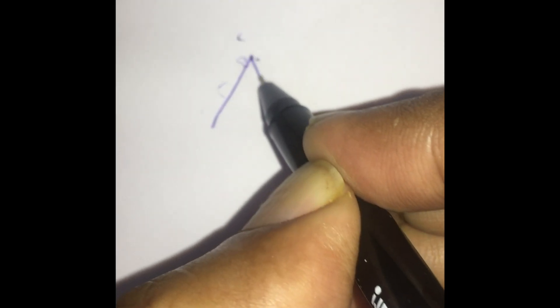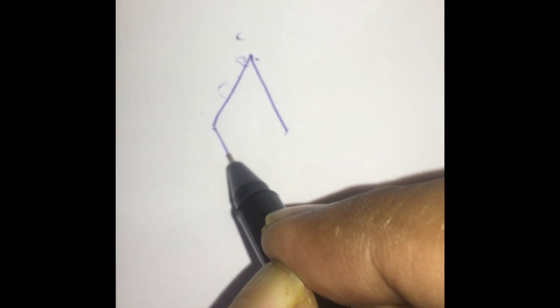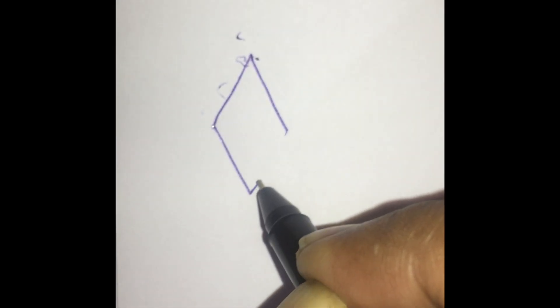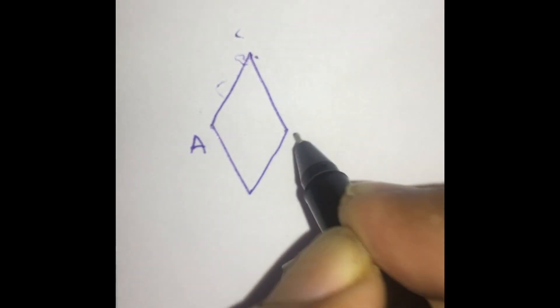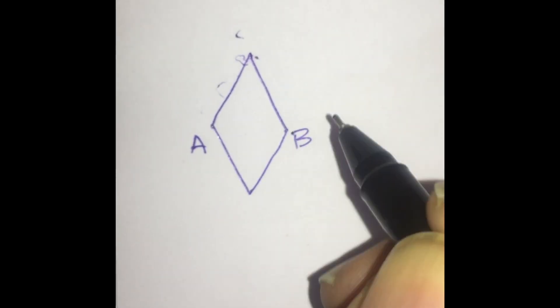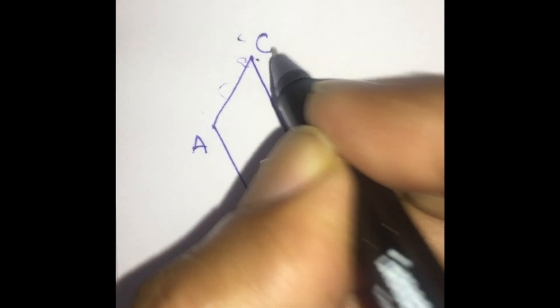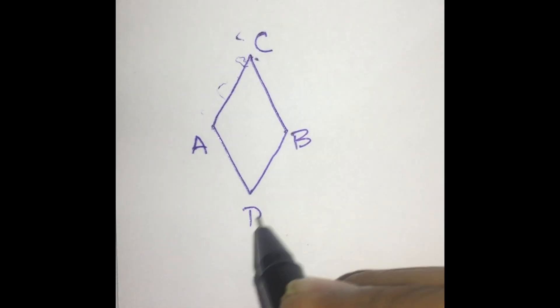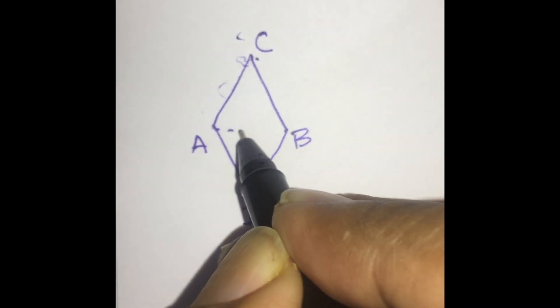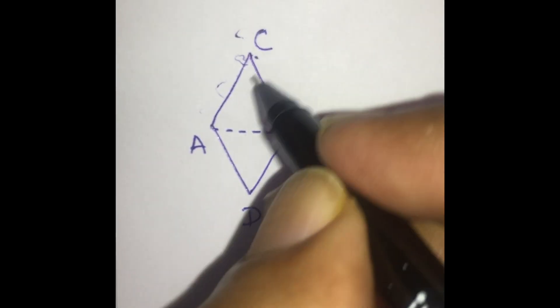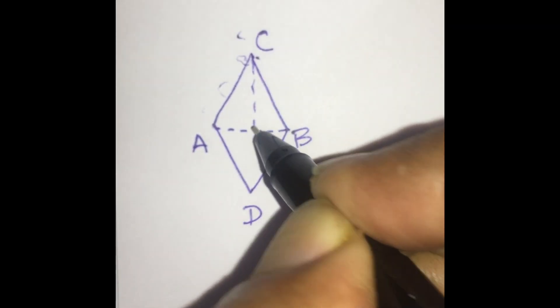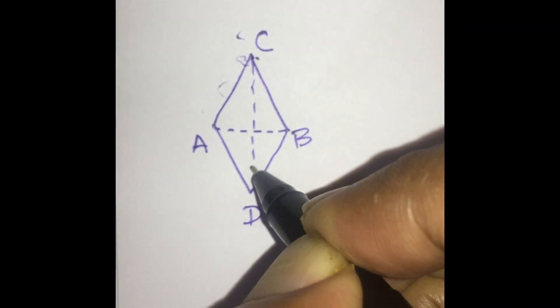The defect is in the shape of a rhomboid. This rhomboid is drawn as follows: the four points are marked A, B, C, and D. A-B is the short diagonal, and C-D is the long diagonal.